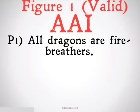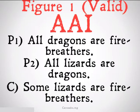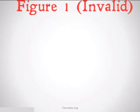Figure 1 valid AAI might look something like: all dragons are fire breathers, all lizards are dragons, therefore some lizards are fire breathers. It's interesting to note that neither dragons nor fire breathers need to exist. The only thing that needs to exist for this argument to be valid is lizards, which do in fact exist. So the argument is valid — whether or not it's sound is another issue.